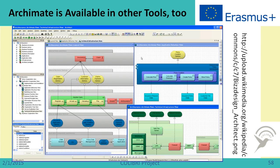To summarize: Archi is the tool and Archimate is the language. Archimate is available not only in Archi — there are many more sophisticated and advanced tools which also support this language. For example, Bizagi and many other tools also allow you to work with Archimate. This is the end of the third part of enterprise architecture basics.